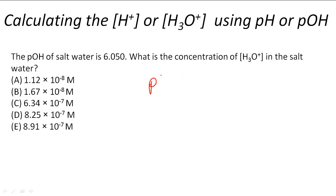To figure this out, we know that pOH plus pH equals 14. So we can figure out pH: 14 minus 6.050 is going to get me 7.95, which is the pH here.